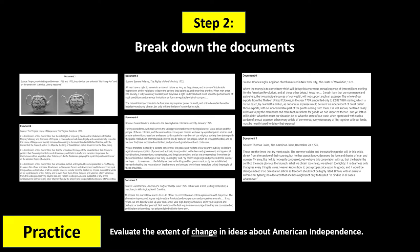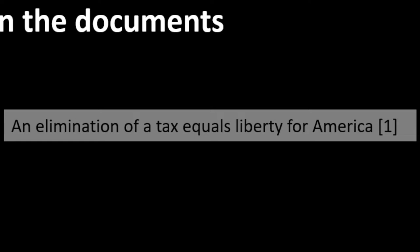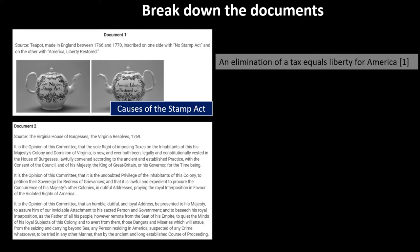For Document 1, after reading the source and viewing the picture, you can easily see that this document is referring to the Stamp Act. Here's my short sentence: an elimination of the tax equals liberty for America. I want to add the historical situation for additional document analysis — I'm going to choose the causes of the Stamp Act. The document already mentions the Stamp Act, so we can't just use the Stamp Act itself as a historical situation, but the causes of the Stamp Act will be enough.